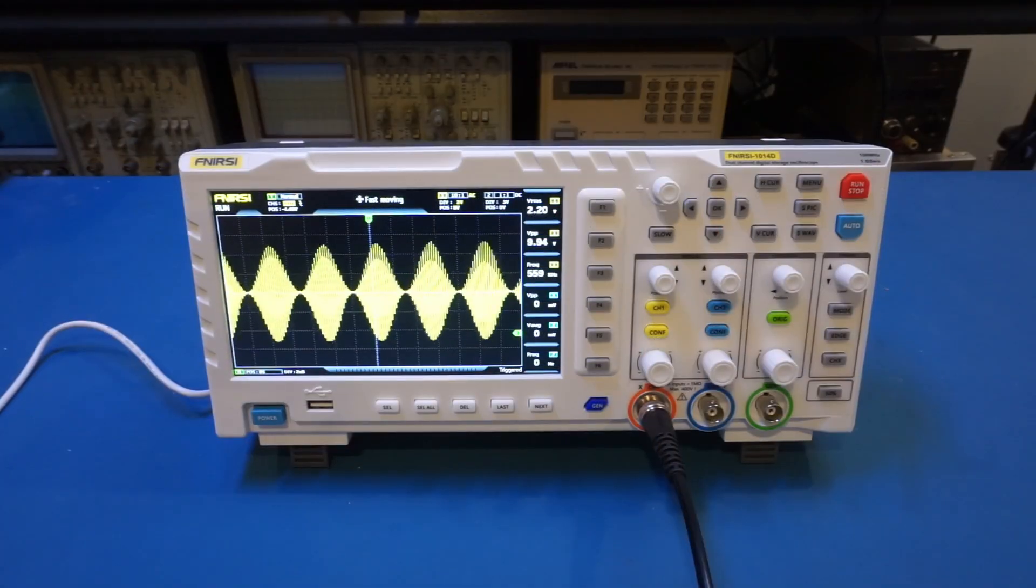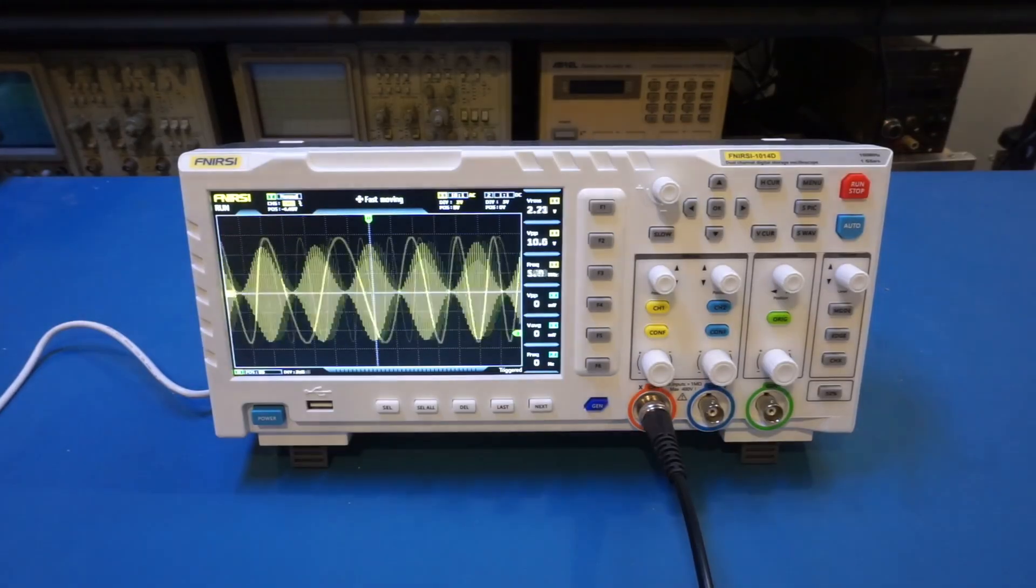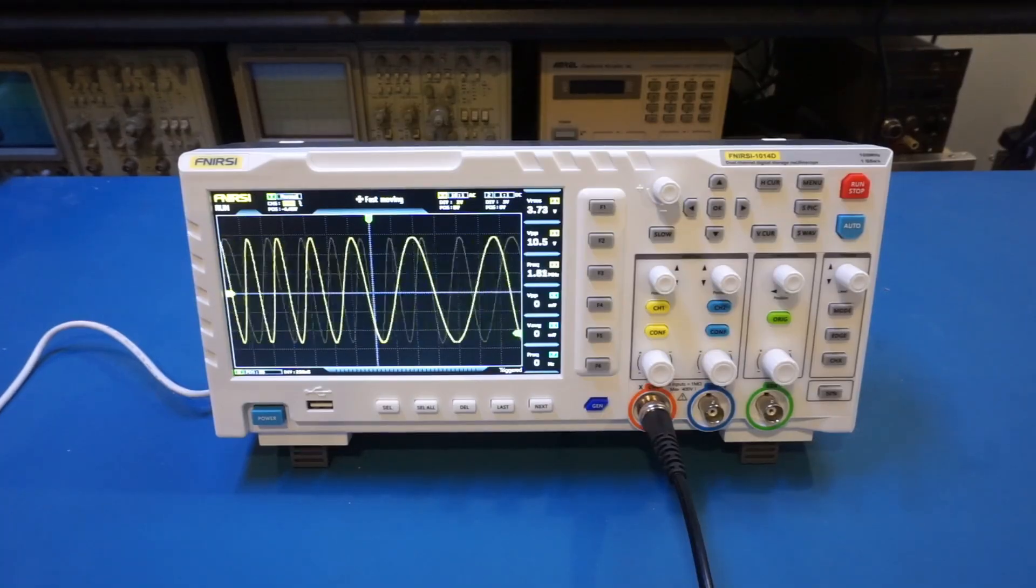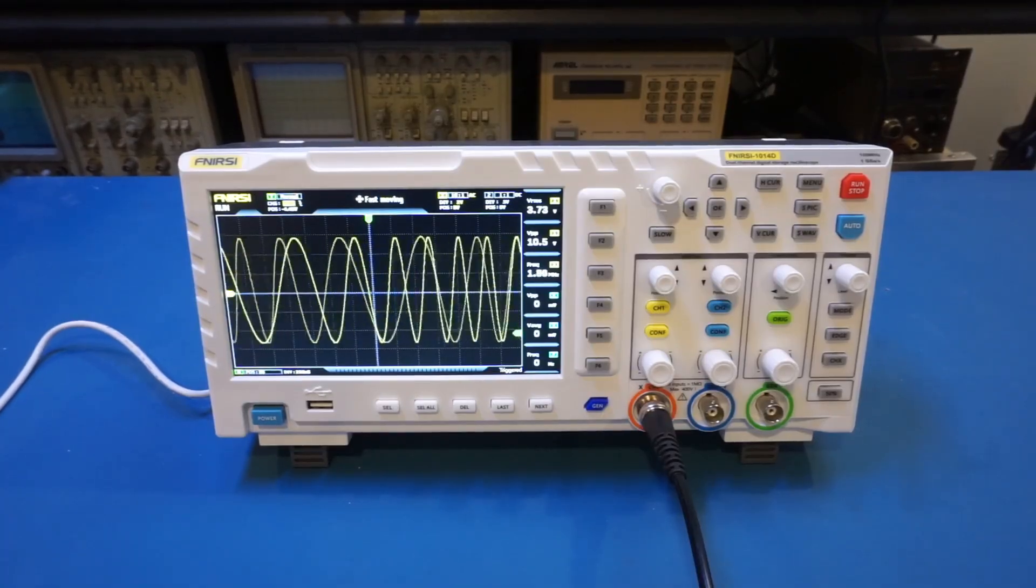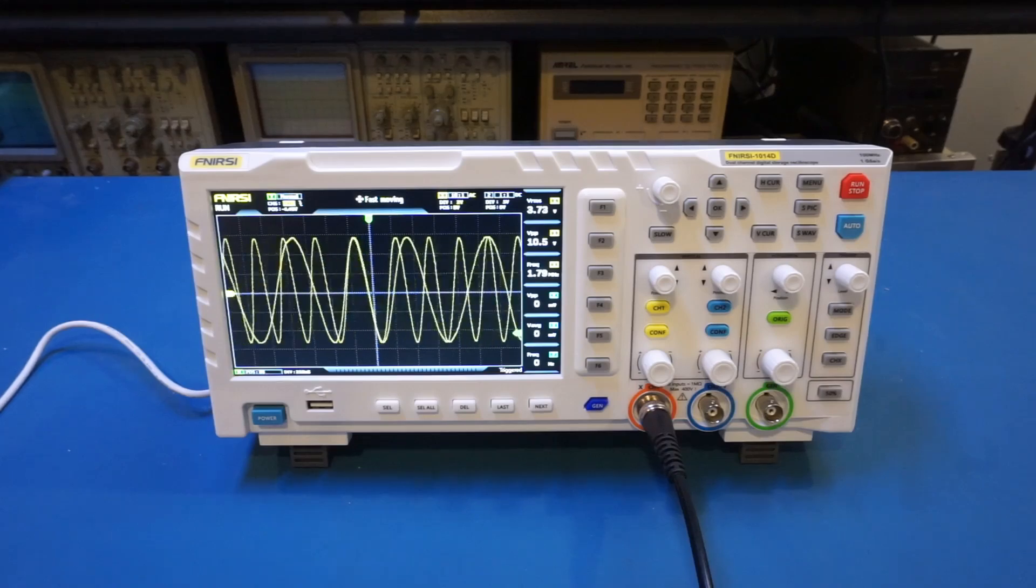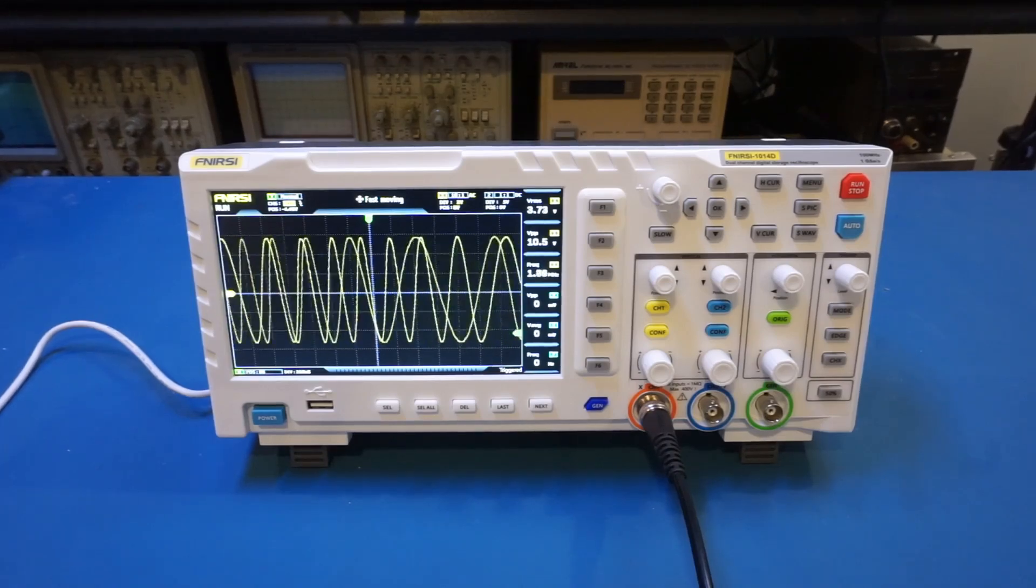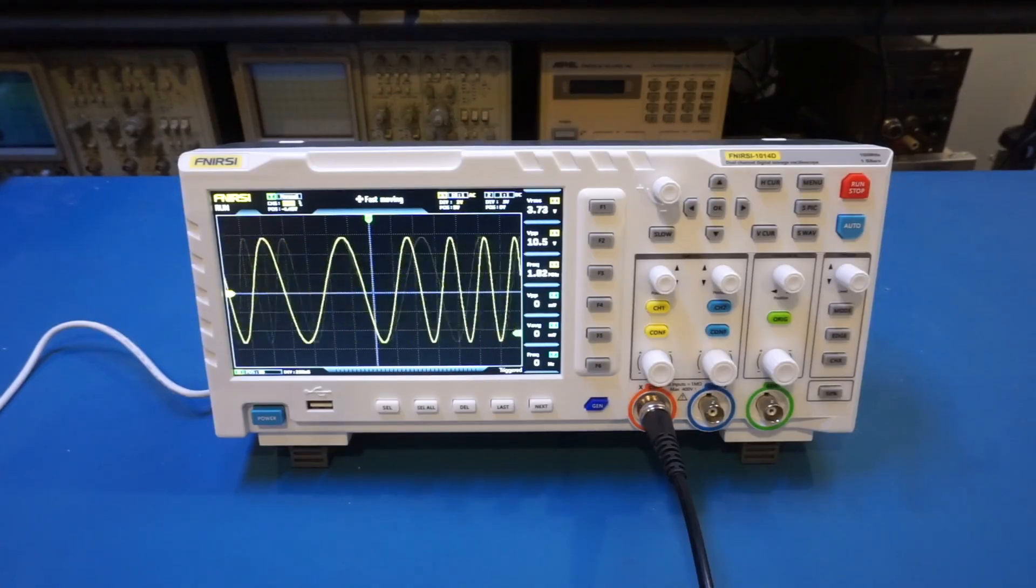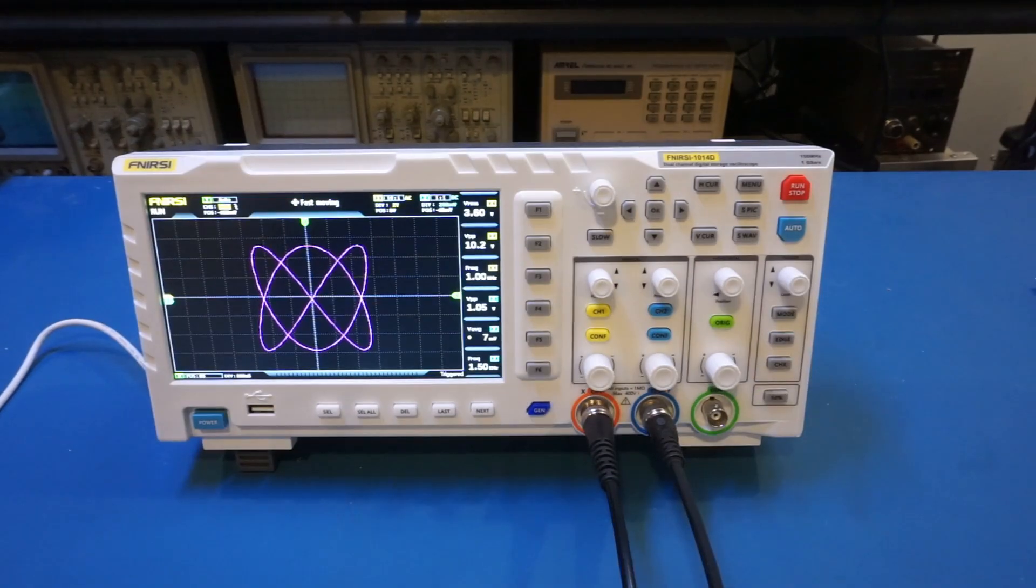And here is a 200 kilohertz AM signal with a 10 megahertz carrier frequency. And what you are looking at here is a frequency modulated signal. The carrier frequency is set at 2 megahertz, and the frequency deviation is 1 megahertz with a modulation frequency of 200 kilohertz.